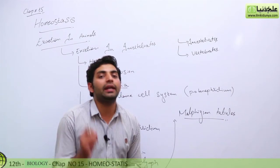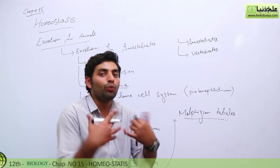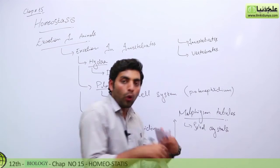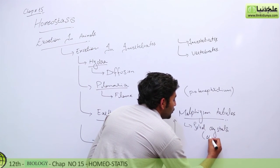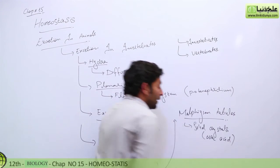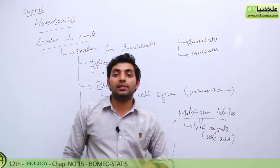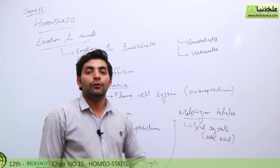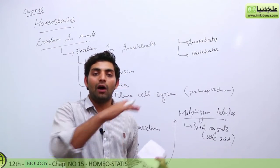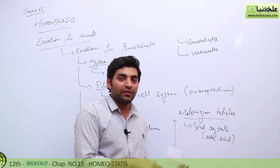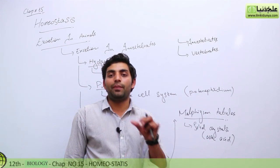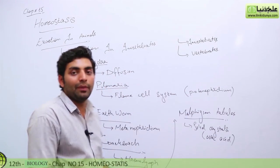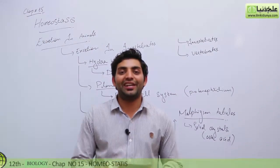This tubular network in the cockroach is named Malpighian tubules. An important characteristic of the cockroach is that it excretes waste mostly in the form of solid crystals of uric acid. This allows the cockroach to survive at a critically low water level. That was the lecture on excretion and invertebrates. Thank you so much.